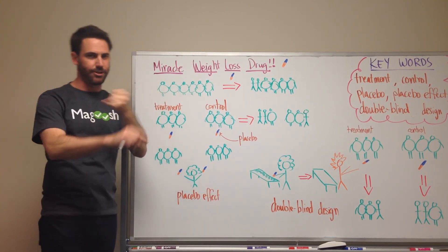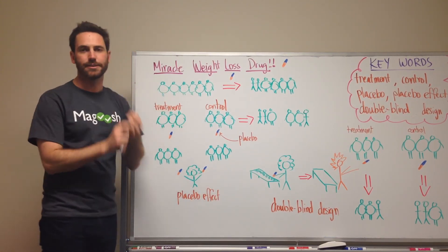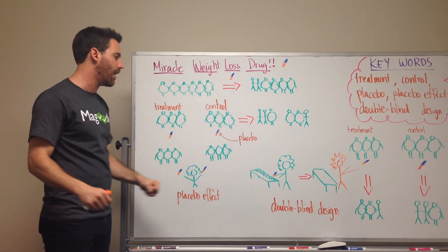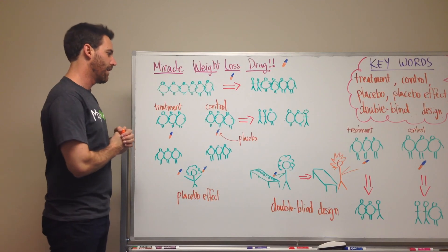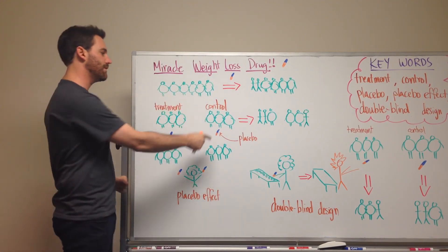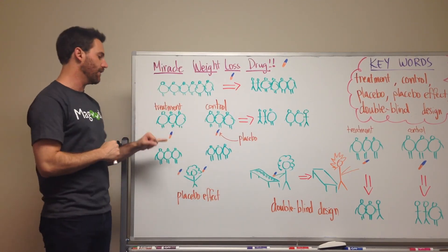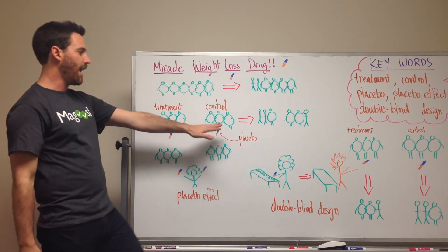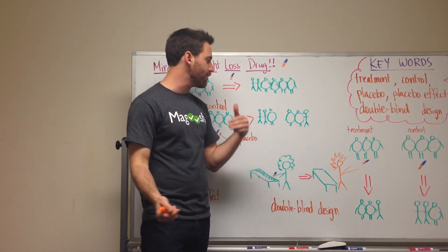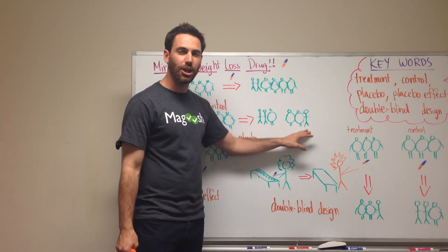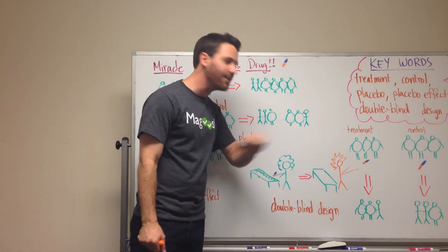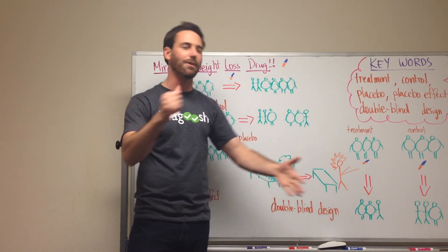And then you hold all other things the same. So you make sure their diet is the same. Make sure they're sleeping the same amount of hours each night. And you make sure that everyone is exercising the same. So that the only difference between these two groups is the drug that they're taking. And after 10 days, you look at the result and you see, oh look, the people who took the drug, they lost some weight. But look over here in our control group, someone actually lost weight. How did that happen?